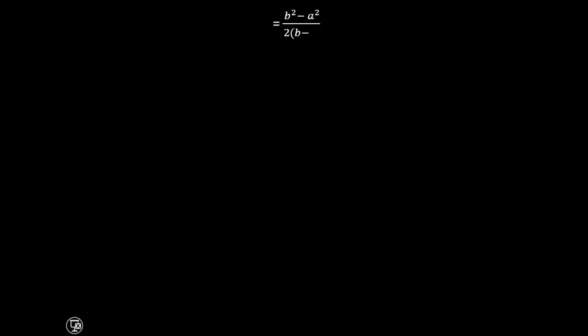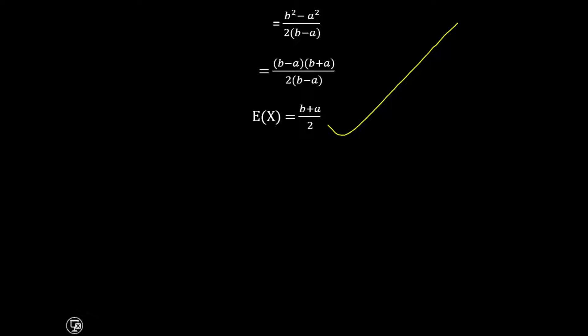Now b squared minus a squared is a difference of two squares, so we expand it as b minus a into b plus a, divided by 2 into bracket b minus a. The b minus a cancels, and what remains is b plus a divided by 2. That is our expected value of the uniform distribution — b plus a divided by 2 — which is the mean of the uniform distribution.